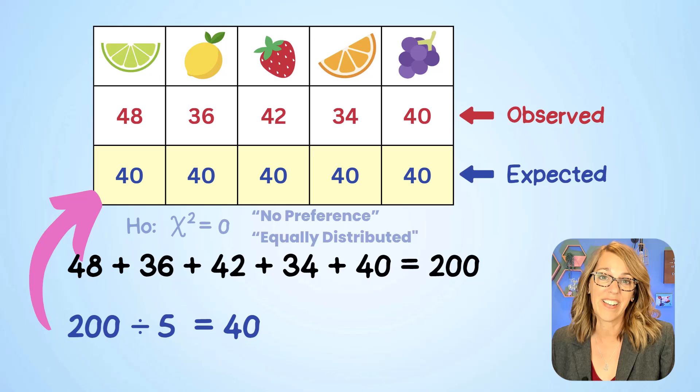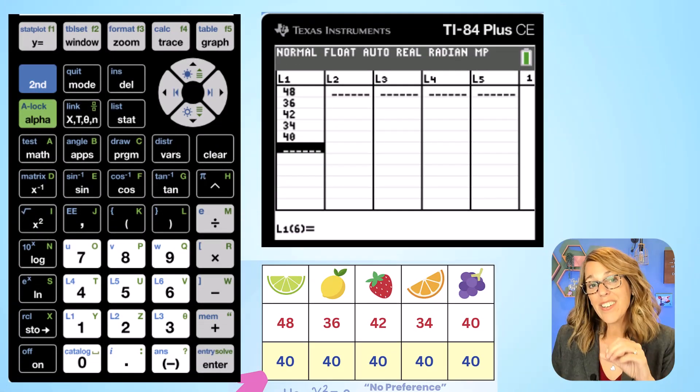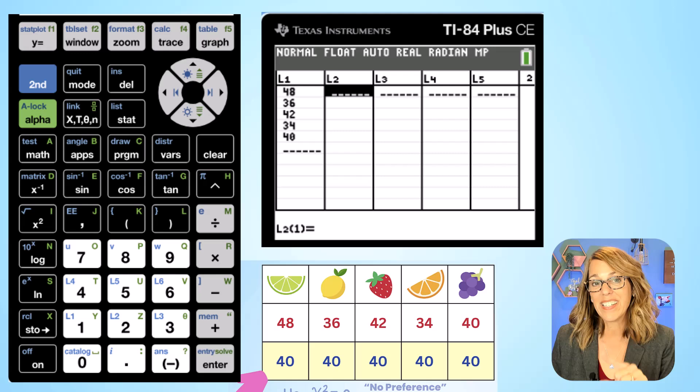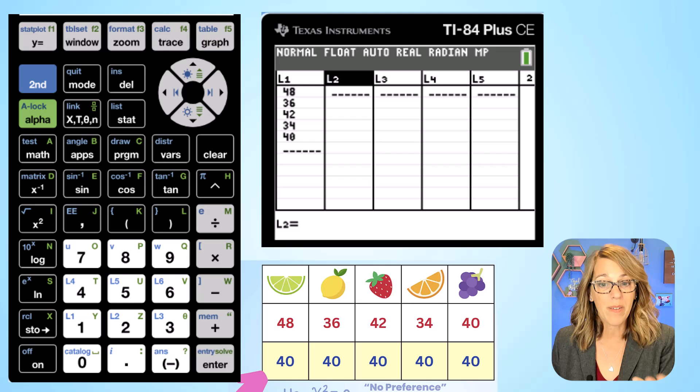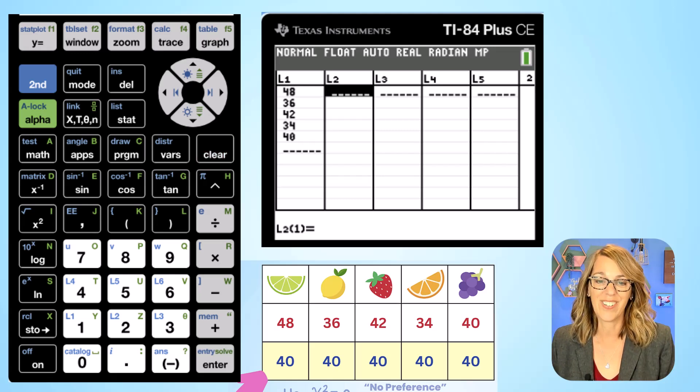Let's get these into the calculator. Now I'm still in stat and edit so I'm ready to enter in my list. Let me arrow over to list two which is where my expected values are going to go. My list is empty but again if yours isn't, arrow up to the list name, hit clear not delete, hit clear and then enter. Okay let's go ahead and enter each of those in as 40.